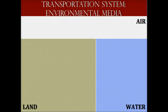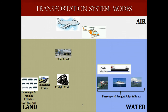So what is a transportation system? There are three different environmental media in which the movement of people and goods happens: air, land, and water. Within these different environmental media, there are different modes of transportation. Airplanes and helicopters for passengers, freight, military, and rescue operations.